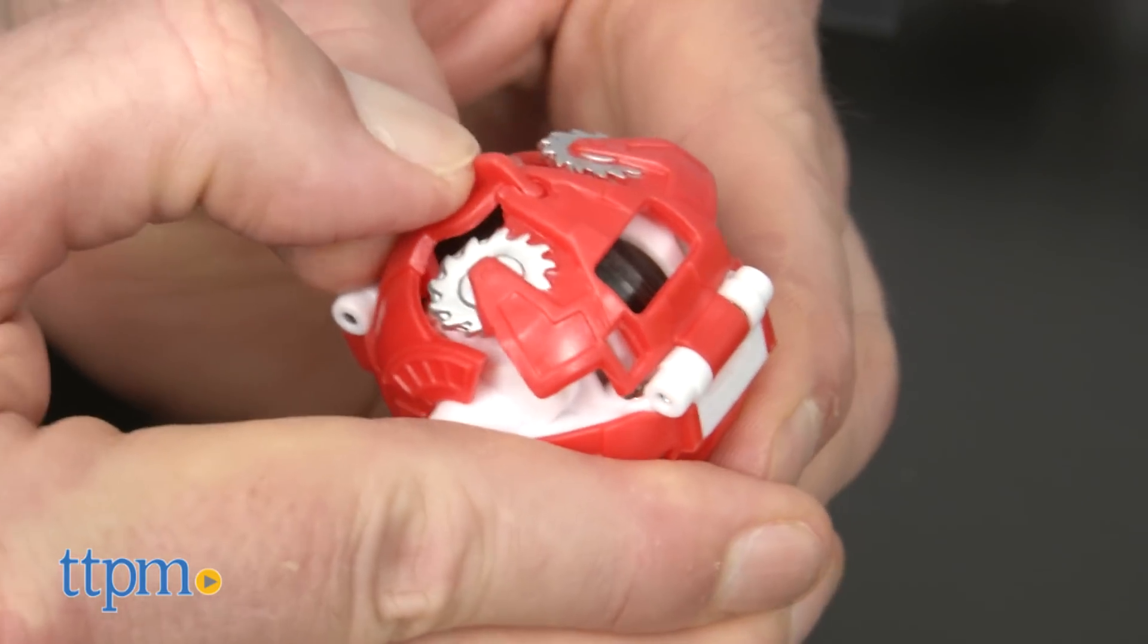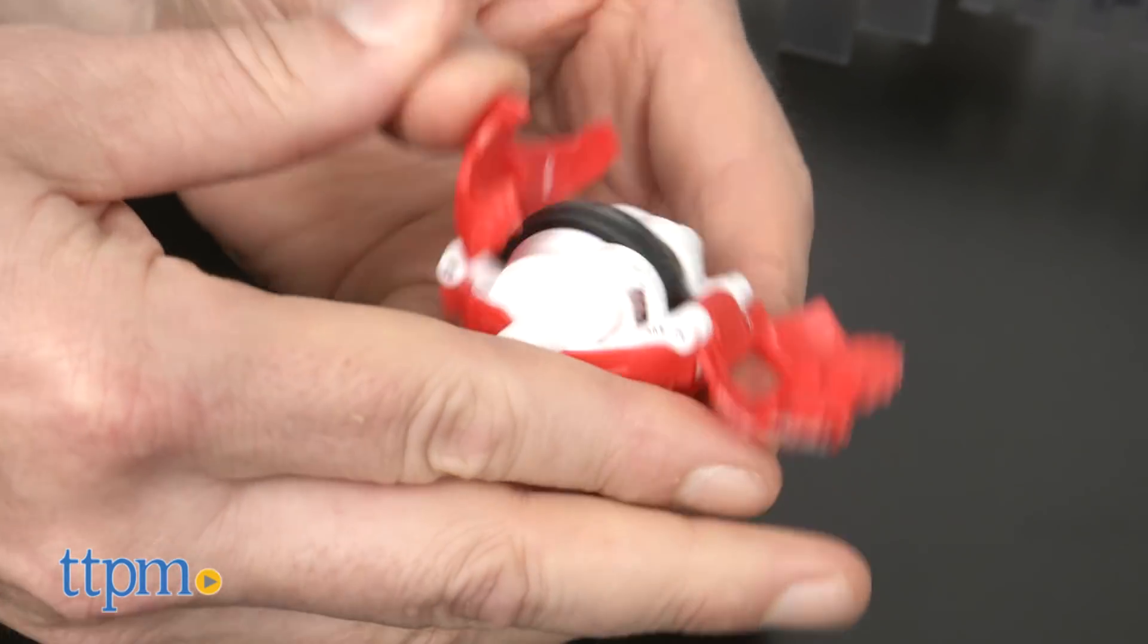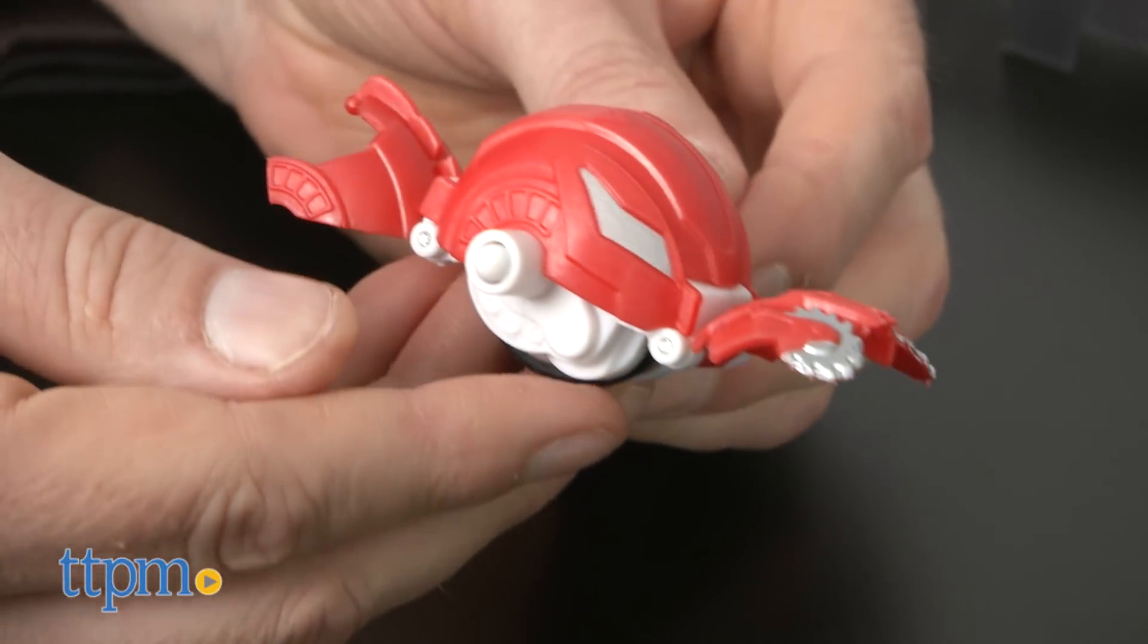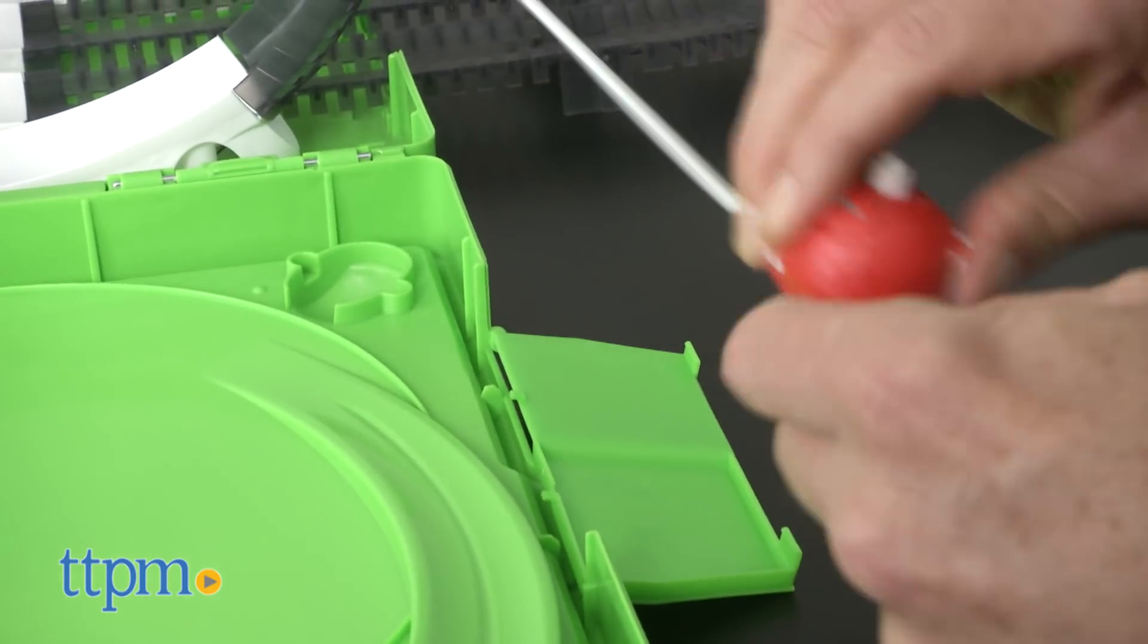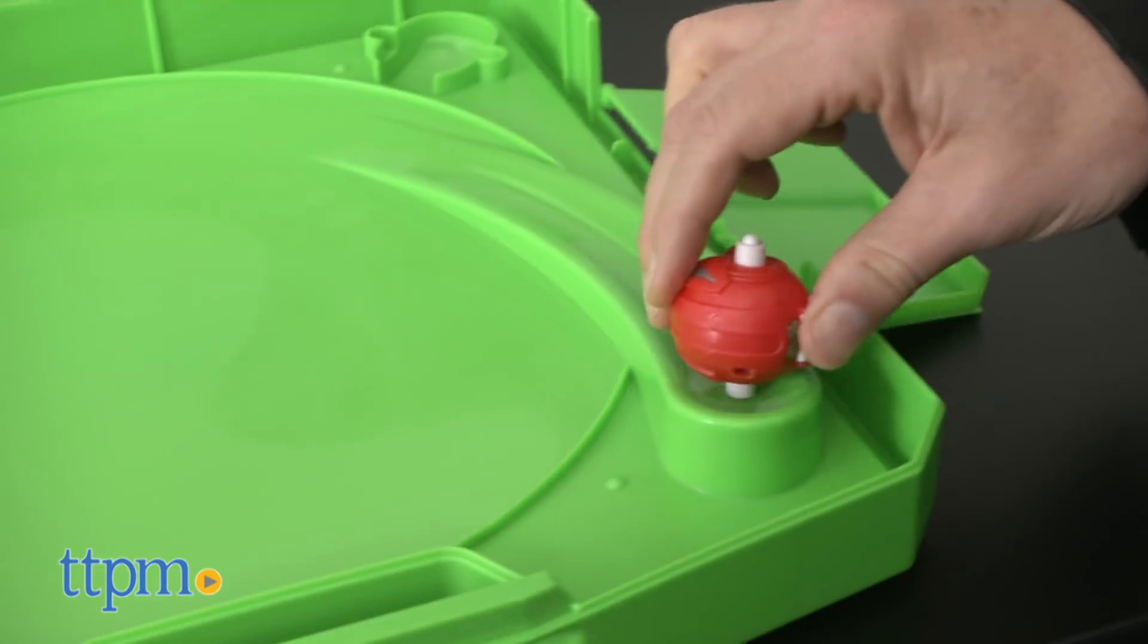Power Rippers are these versatile little racers that operate as spinning spheres and when opened up as a kind of race car. They work with a pull cord and they'll remind you of Beyblades or your grandparents of the SSP racers from 1972.